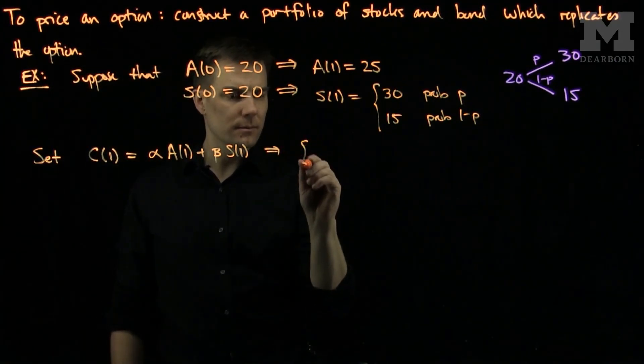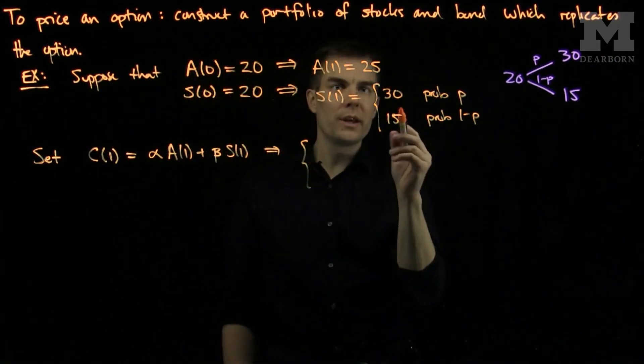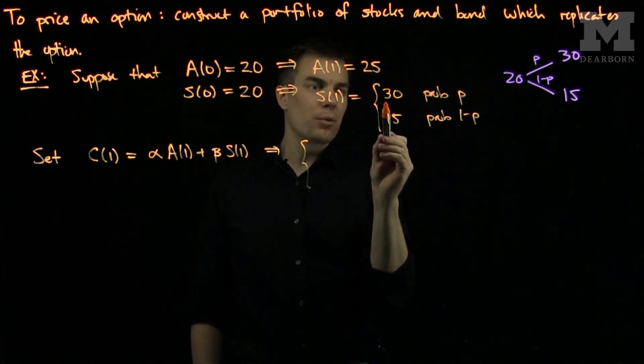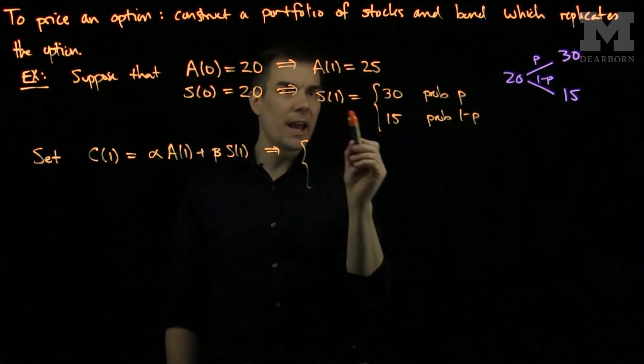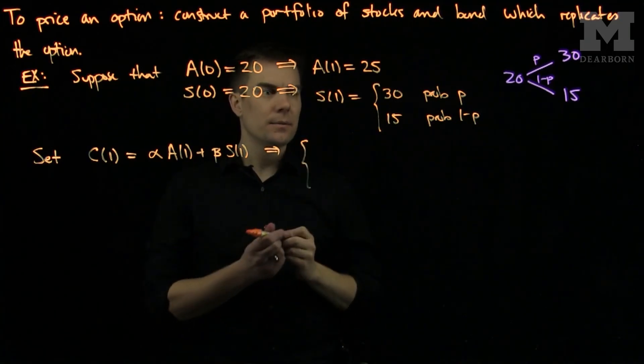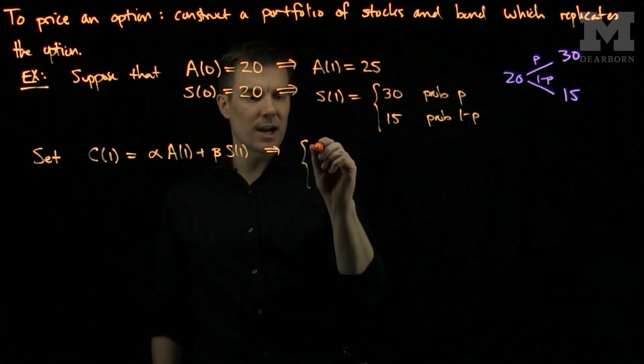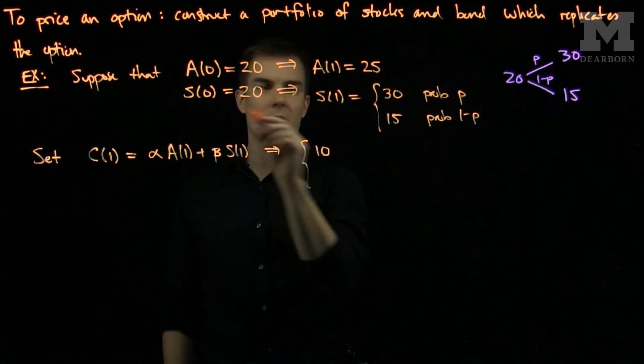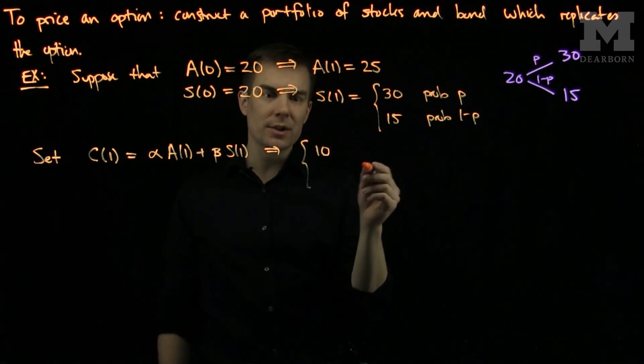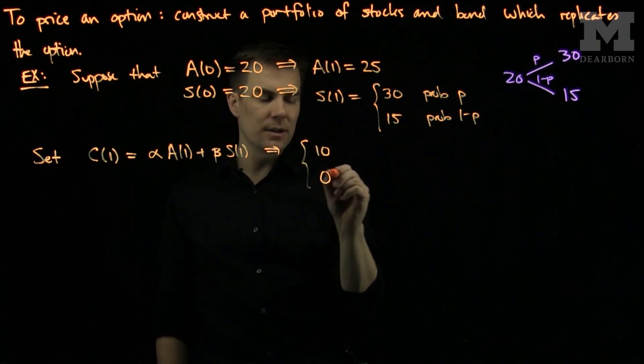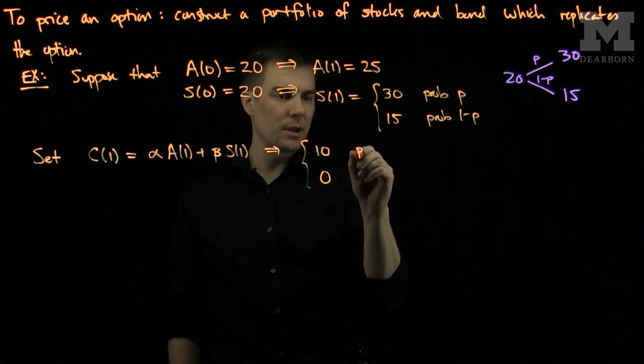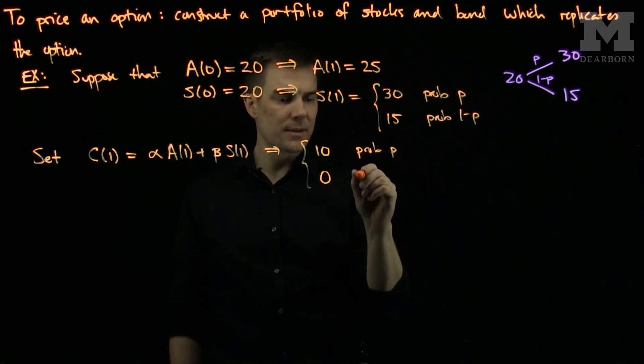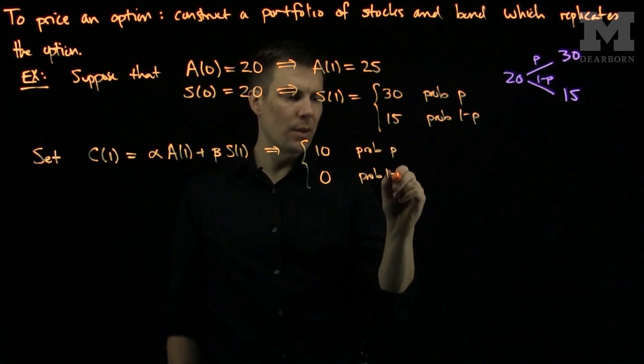So the value of my call option, my call will either be worth what? If the price goes up to 30, I will have a gain of 10. So I'll either gain 10 on my stock price. Or if it goes down to 15, I will execute the call and I will gain 0. So this happens with probability P and this happens with probability 1 minus P.